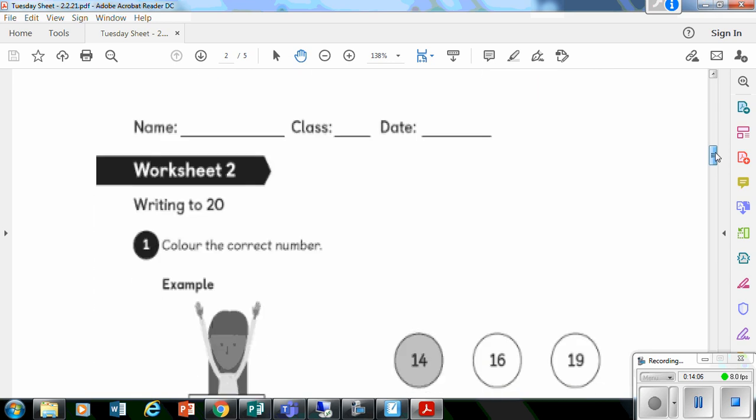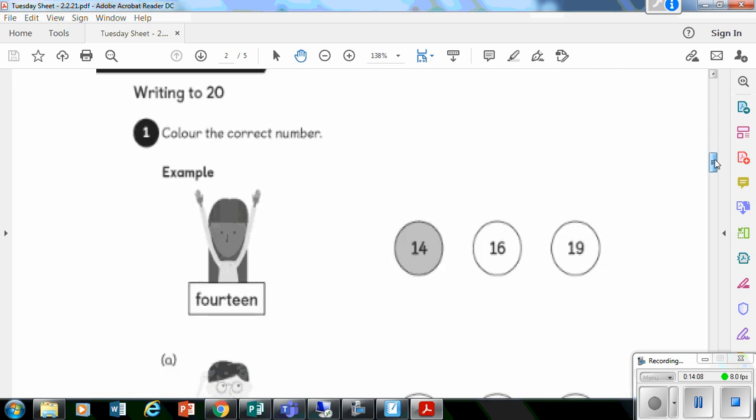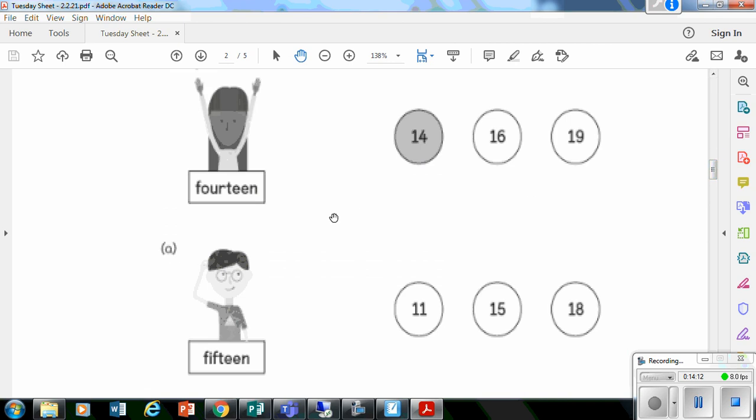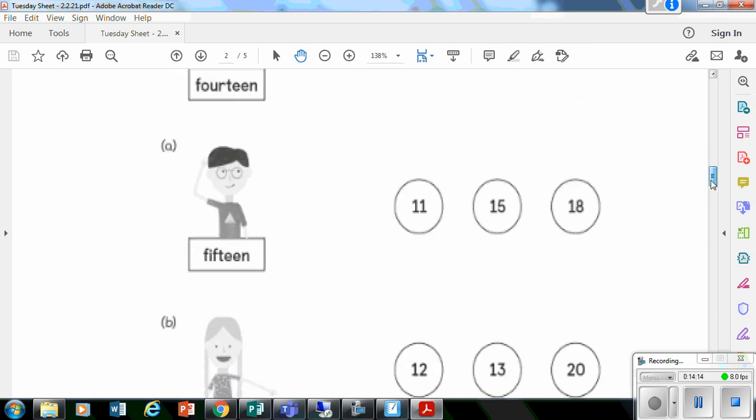You've then got a worksheet that looks a bit like this. It says colour in the correct number. So the first one's done for you. You follow on with the rest of the questions.